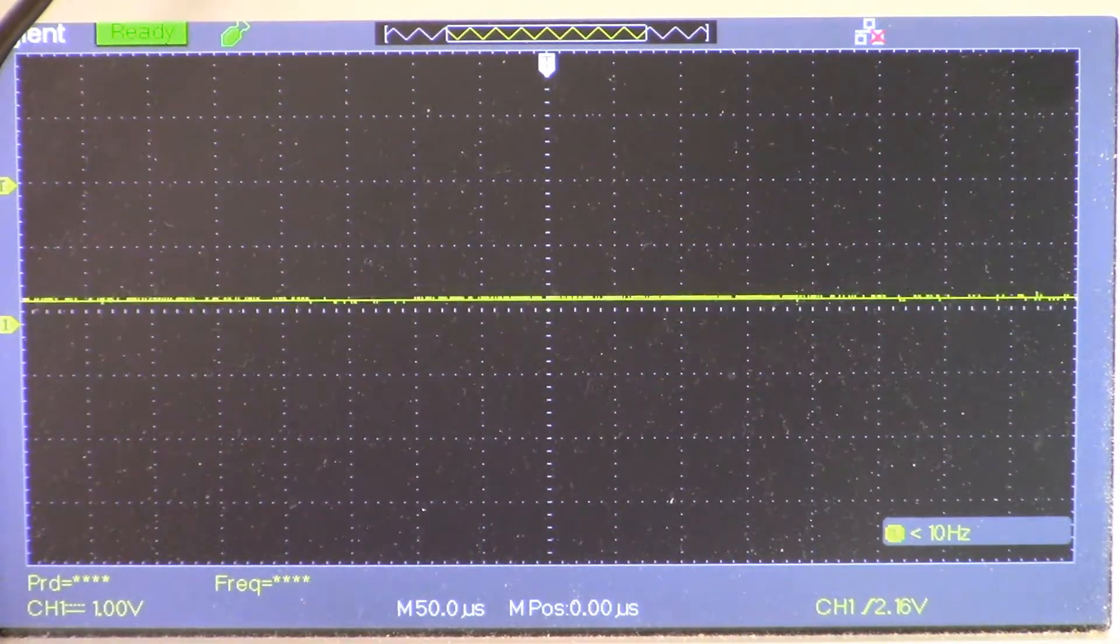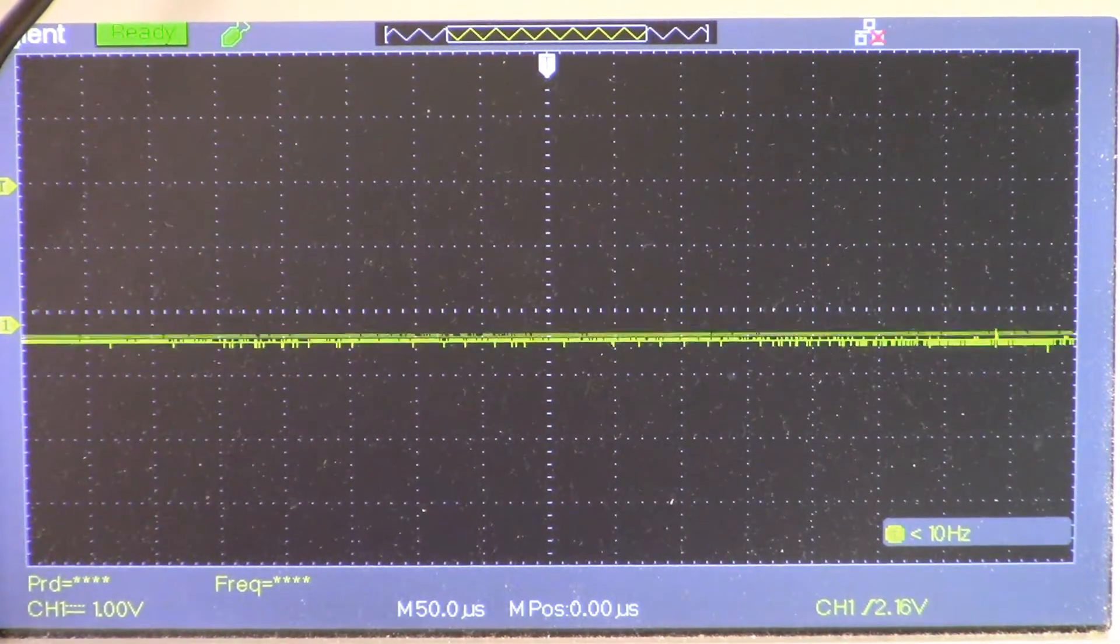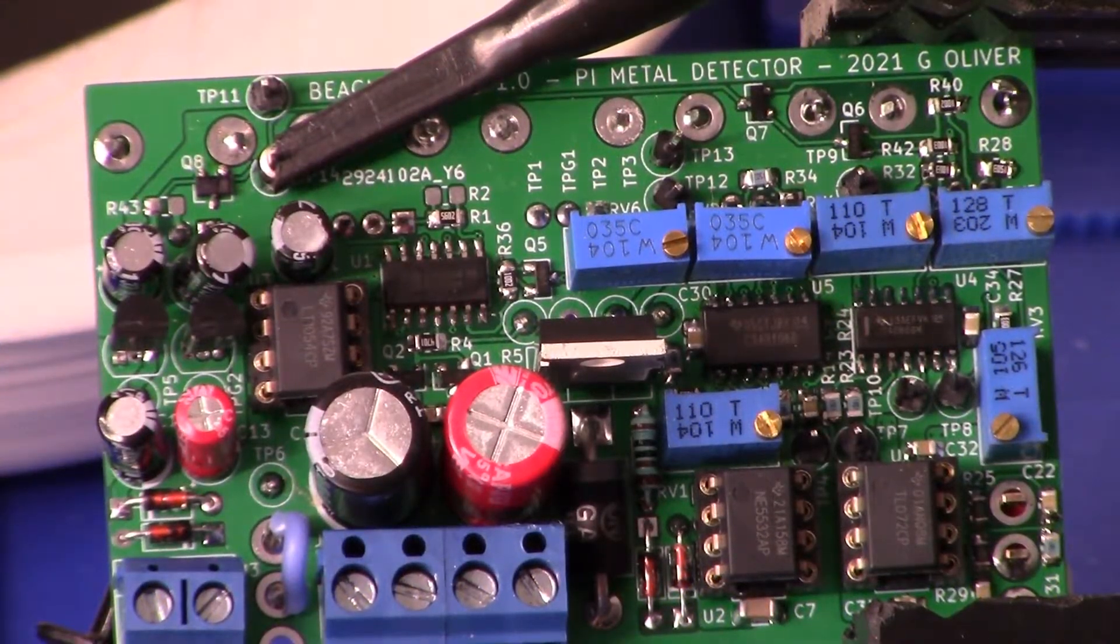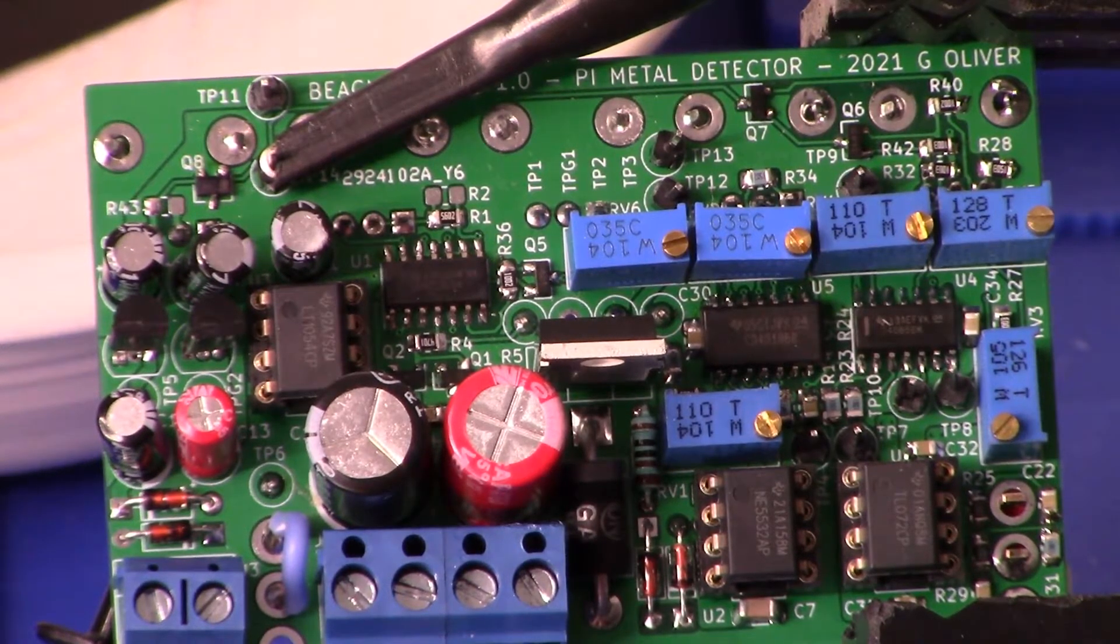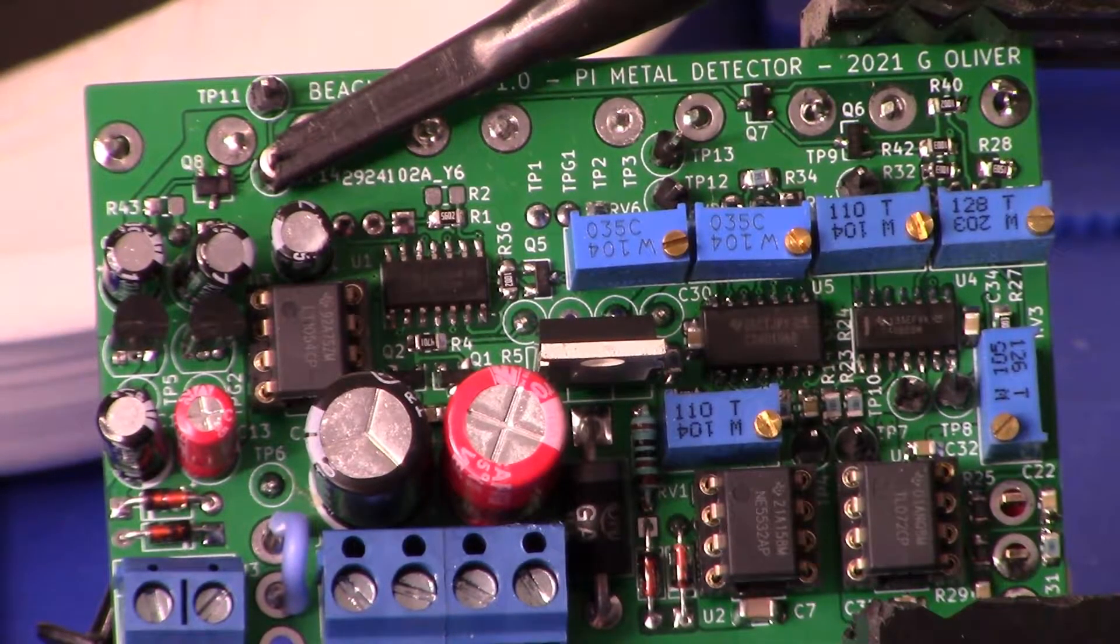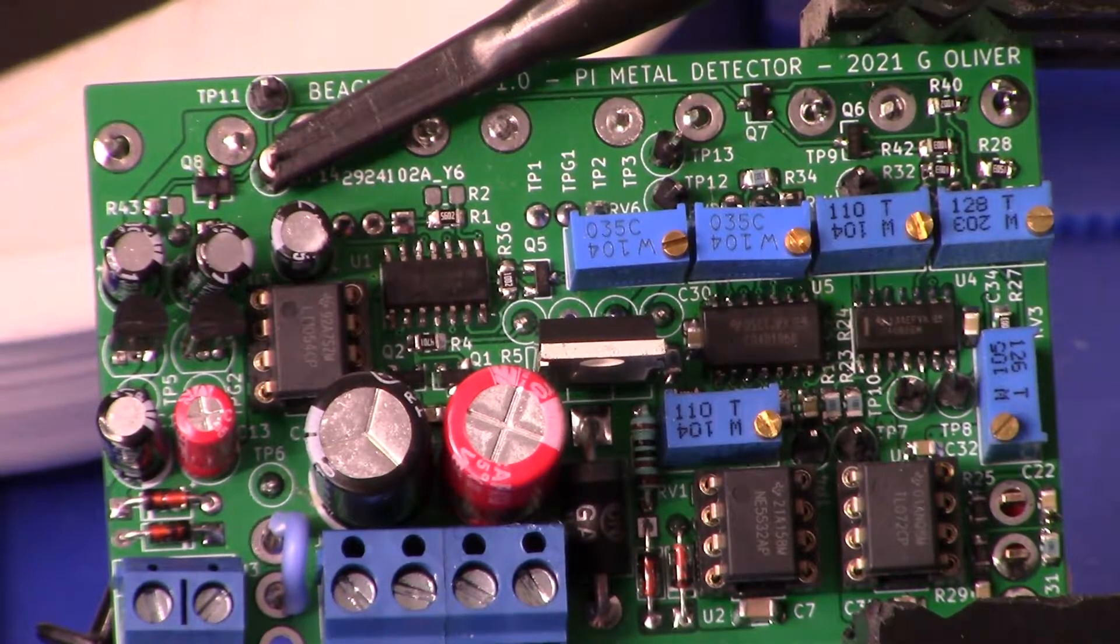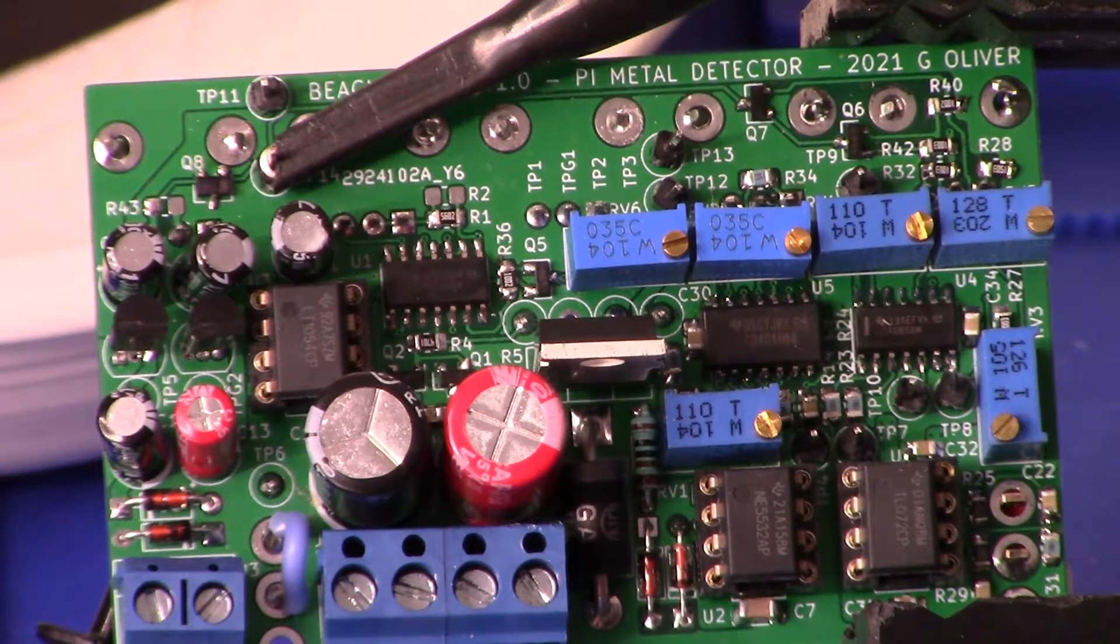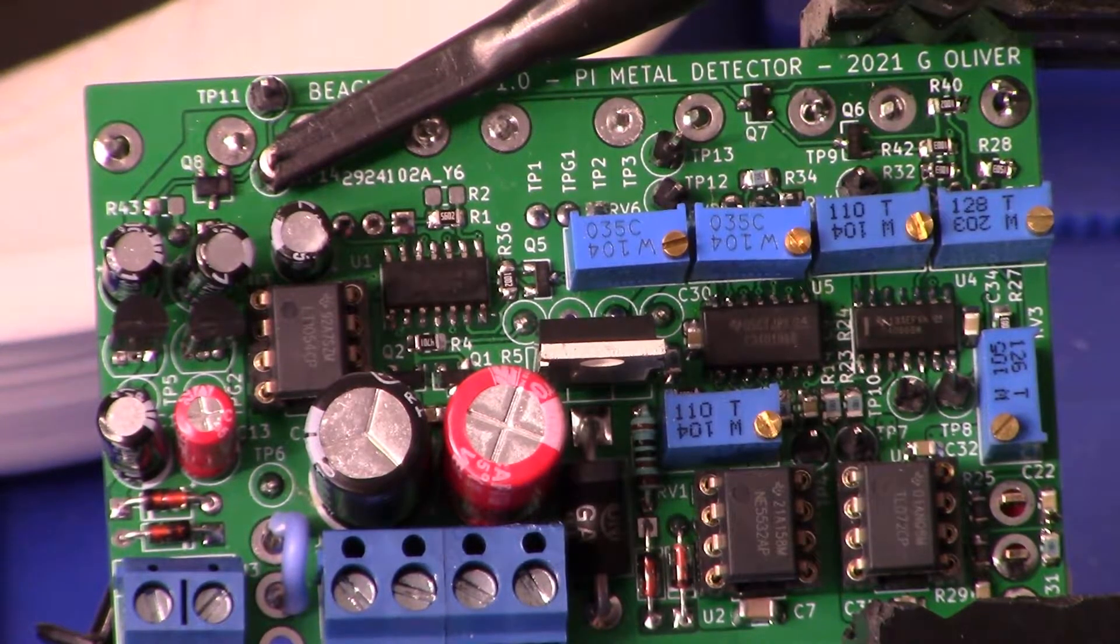On to the audio section. All right guys, final video on the Beachmaster pulse induction metal detector project. This section is the audio output section. You can see that I have my oscilloscope probe set up, it's attached to test point 14. All the components are placed on the board.